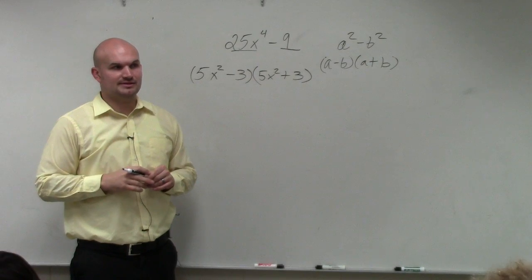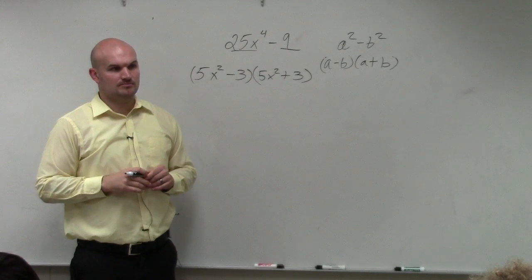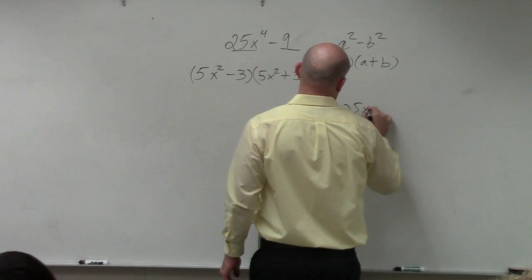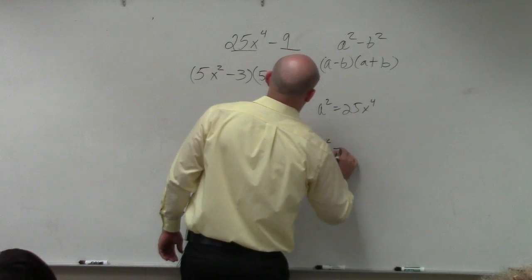Does everybody see how I quickly and easily factor that? You can do it the long way. You could say a squared equals 25x to the fourth. B squared equals 9, right?